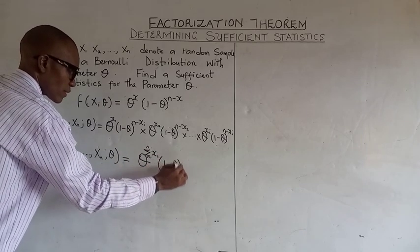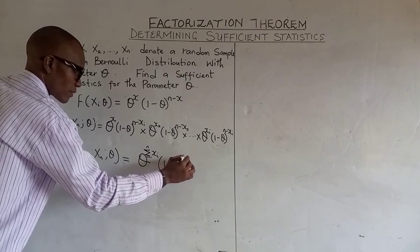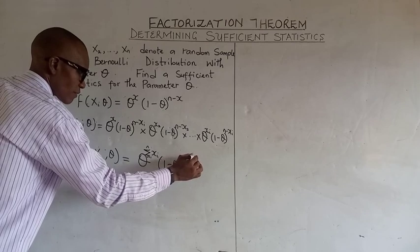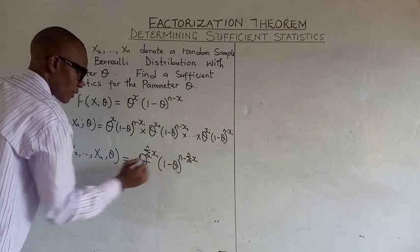(1 minus theta)^(n minus xi's). We have i is only from 1 to n.